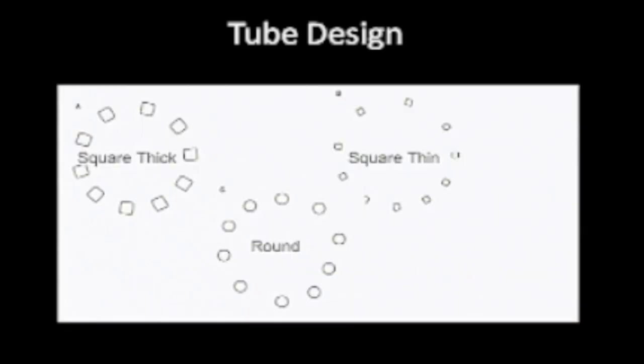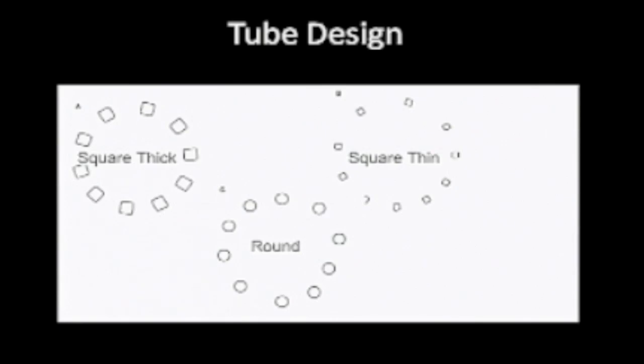Here is a comparison of square thick versus square thin versus round material cross-sections. In terms of composition, stents are made mainly of metal alloys, though polymers are now being developed. Materials include nitinol, tantalum, platinum, or neobium. The majority are stainless steel.